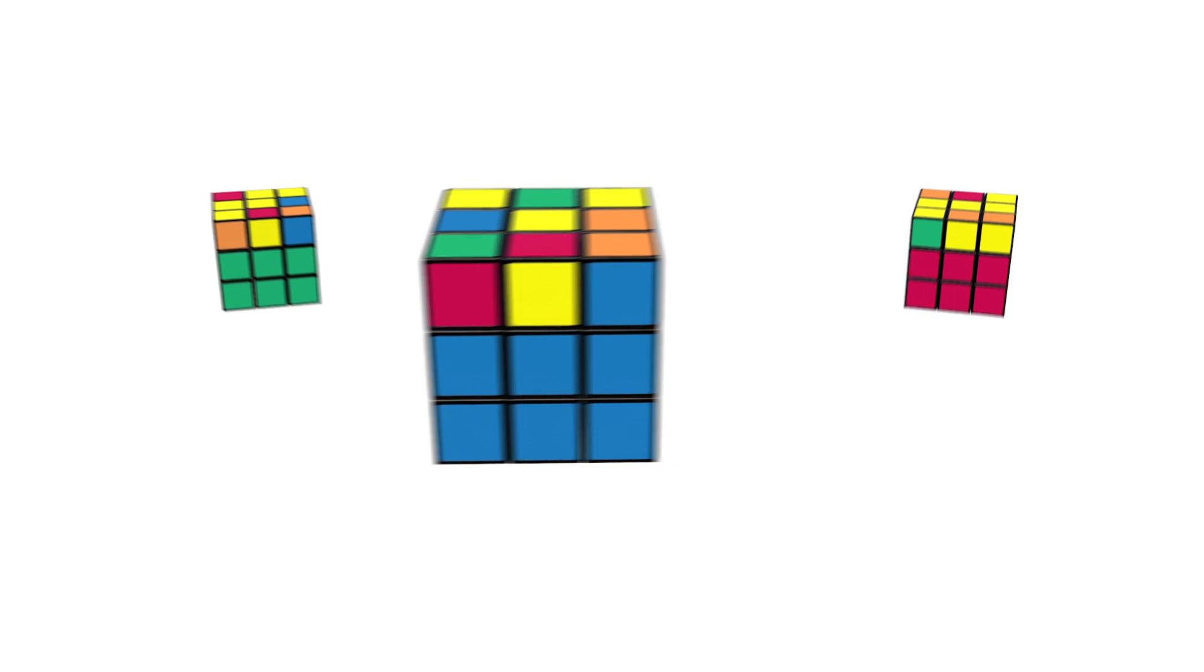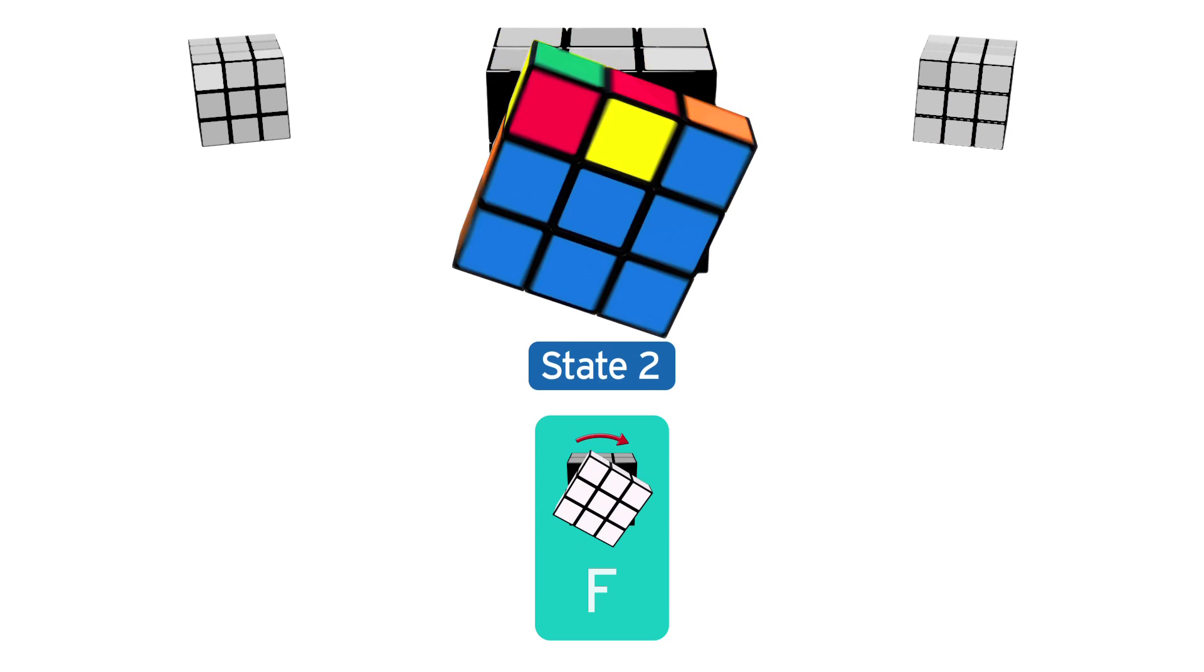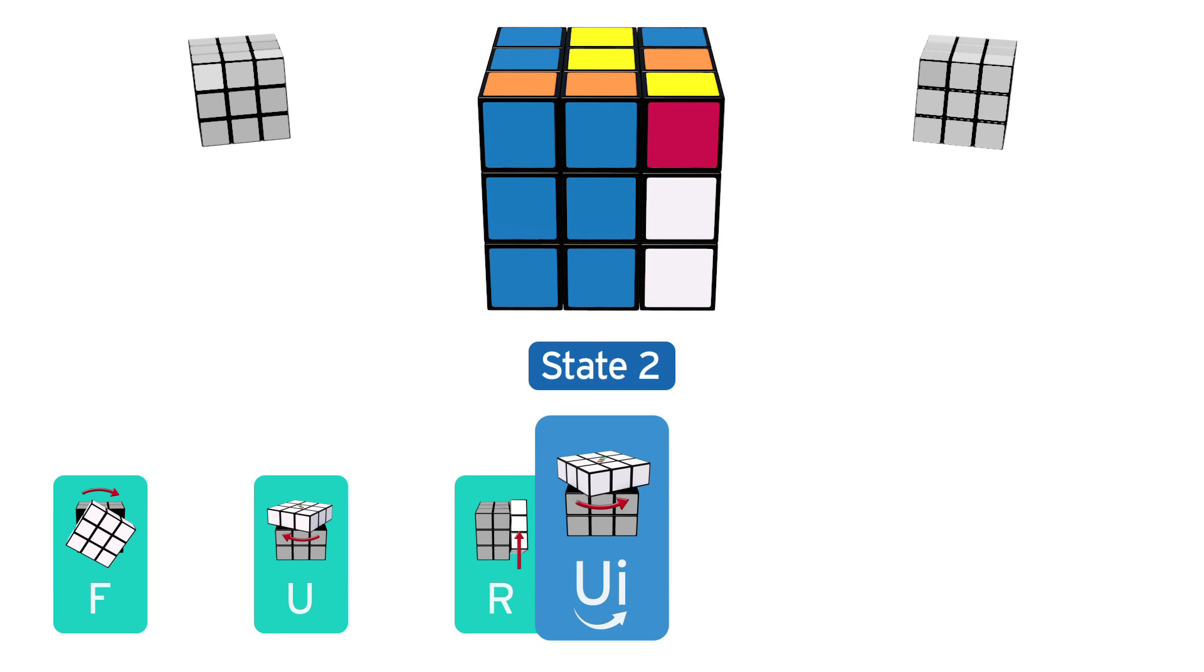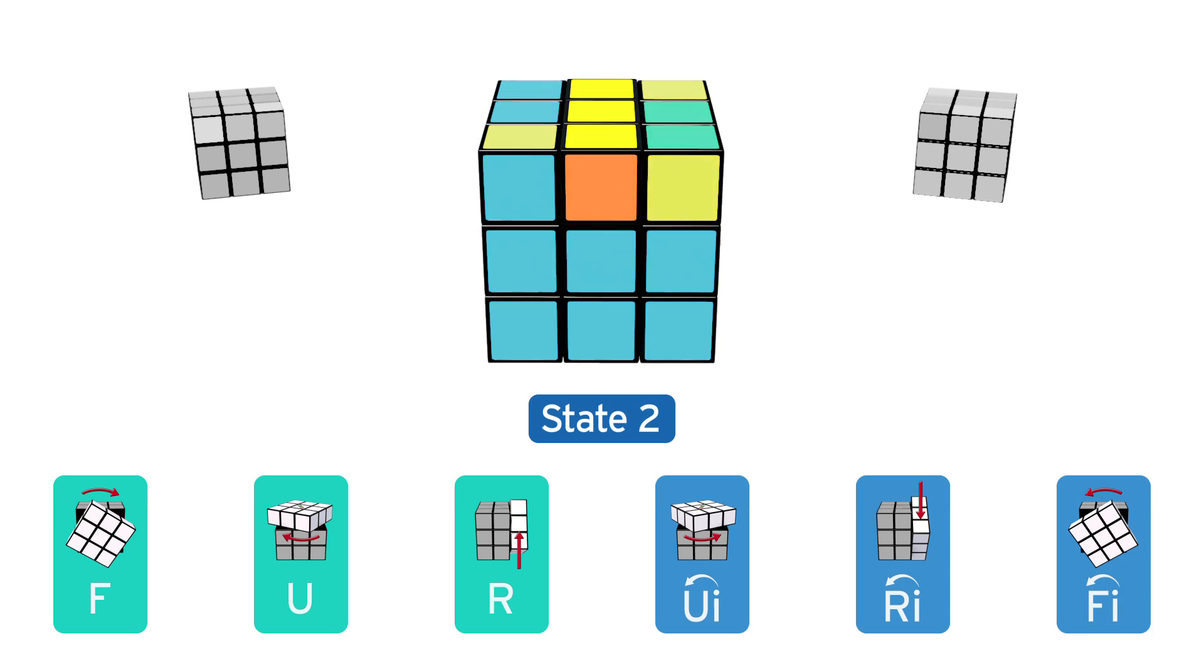If your cube is in State 2, that's just a yellow centerpiece, then do this: Front, Up, Right, Up inverted, Right inverted, Front inverted. Once you've done that, your cube should be in State 3 or 4, which I'll now explain.